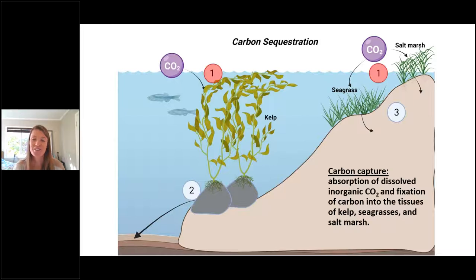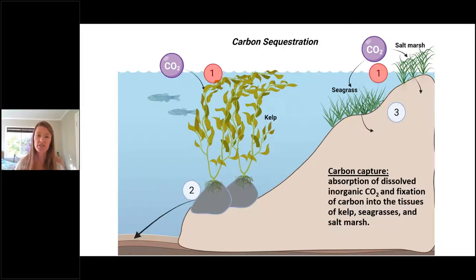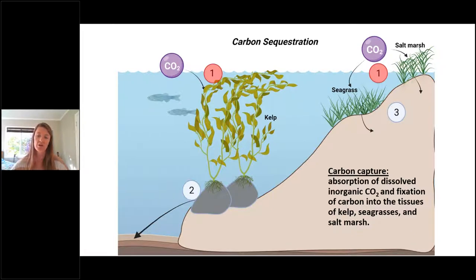Before getting into the assessment, I wanted to provide a brief science lesson. I created a figure for part one of the report series to compare and contrast how the photosynthesizers we assessed differ in how they sequester and store carbon long-term. On the right side of the figure are those coastal blue carbon habitats — seagrass, salt marsh, and mangroves. On the left side is a kelp forest. They are all photosynthesizers, capturing carbon through photosynthesis and fixing that carbon into their tissues — pulling in carbon dioxide, keeping it in their tissues, and releasing oxygen as a byproduct.